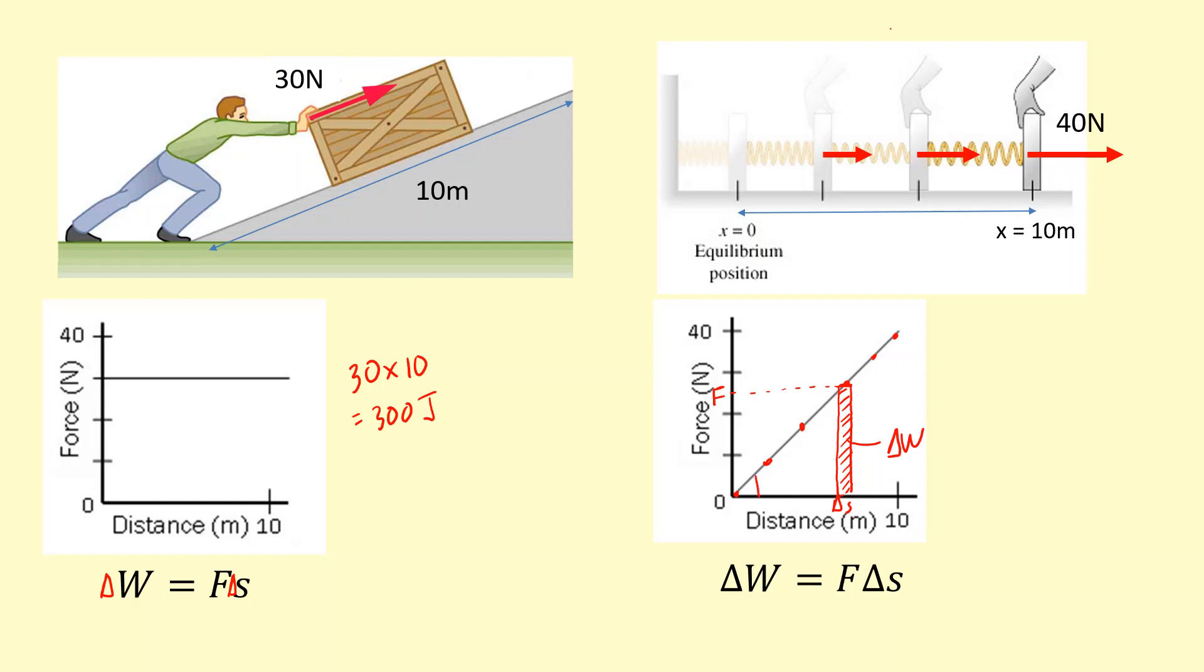In this case, the area is a triangle, so I can do 40 times 10. But because it's a triangle, I divide it by 2. So that gives us 200 joules of work done to stretch it from the start to the end.